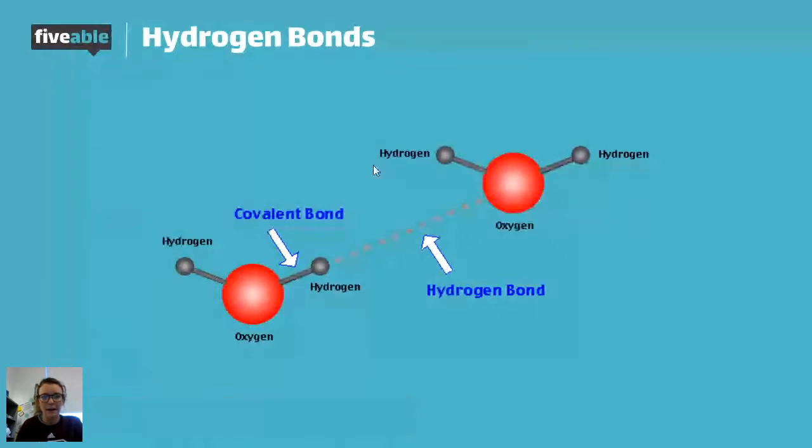So those are the bonds we're talking about. They're going to help us determine how molecules act, but they're also important to know because they're just the sharing of electrons. We need electrons to form more bonds.